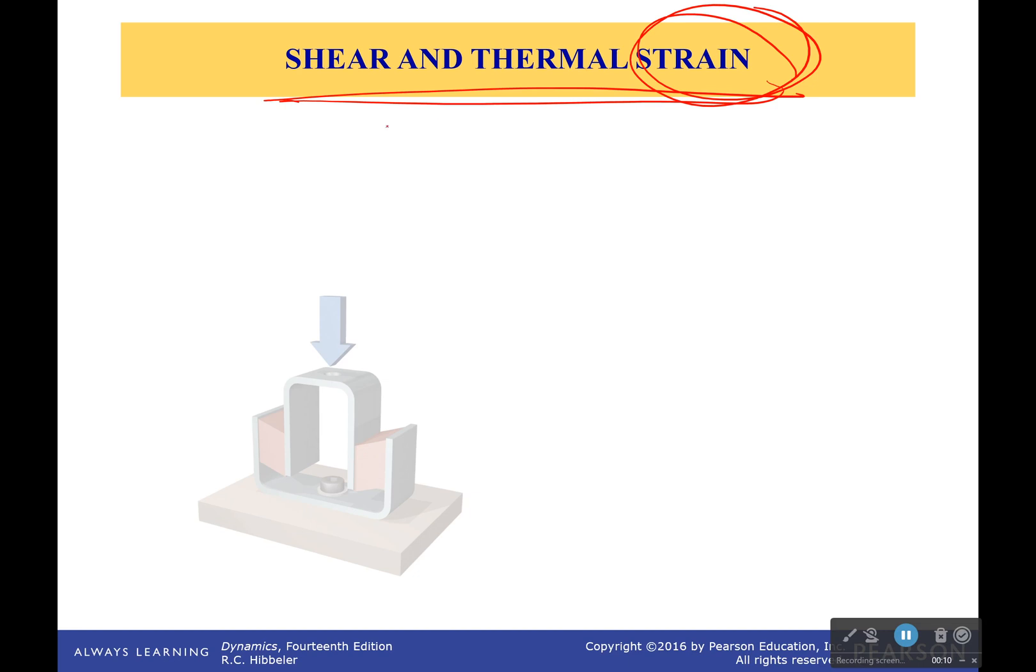But strain is that normalized deformation. So when we pull on something, it gets longer and there is some sort of deformation. And we normalize that based on how long it was originally. Because obviously, if something is twice as long as it was before, that's a big stretch. While something is only 1% longer than it was before, not as big a stretch.